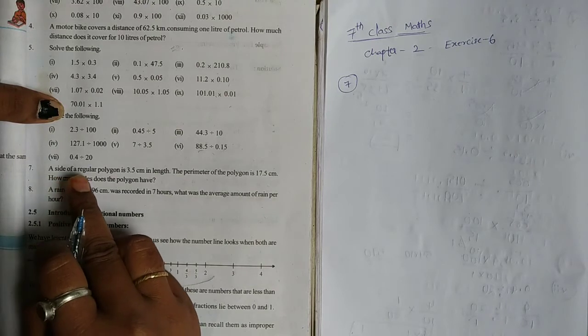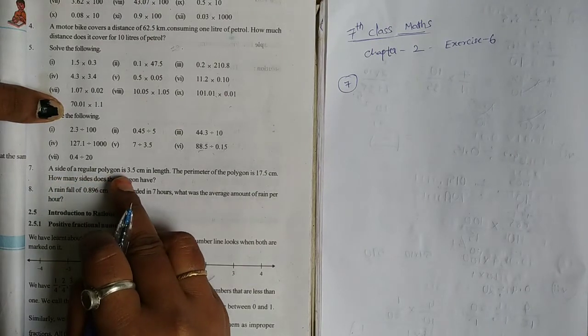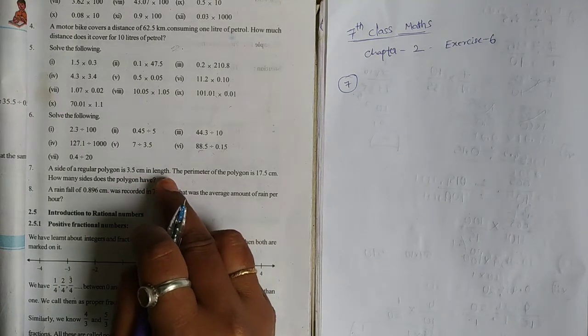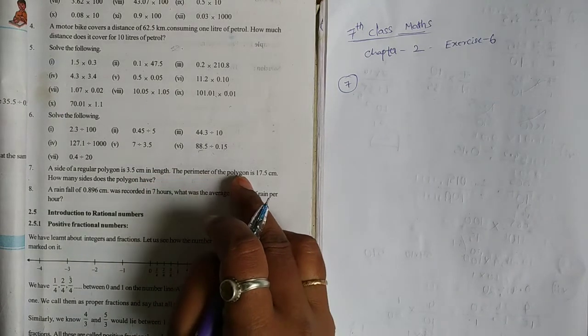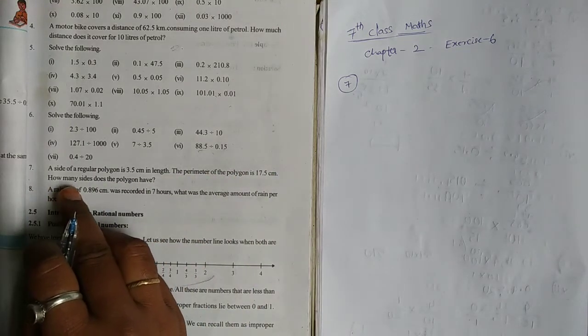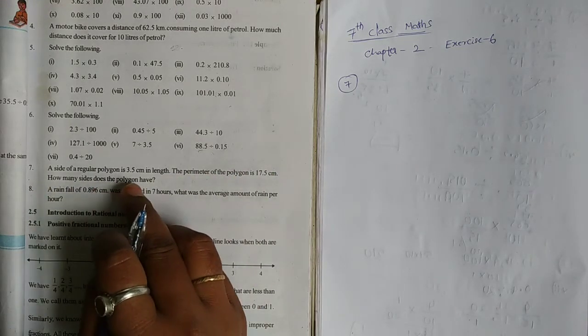A side of a regular polygon is 3.5 cm in length. The perimeter of the polygon is 17.5 cm. How many sides does the polygon have?